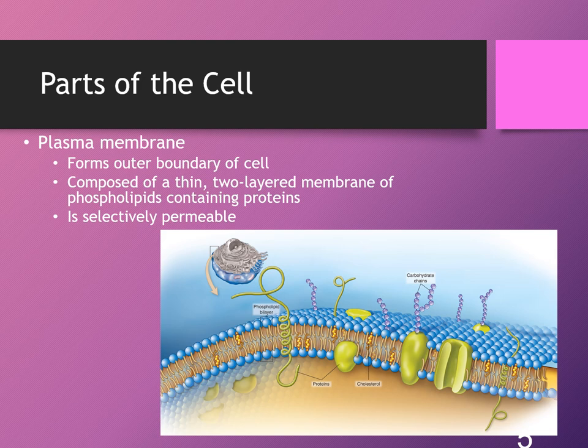When we talk about the cell membrane, we say that it's selectively permeable — this goes back to that idea of it being like a well-guarded gateway. The cell membrane is responsible for regulating everything that goes in and out of the cell. However, there is one thing that can move in and out of the cell without any difficulty, and that is water.